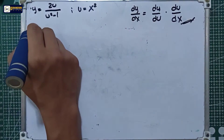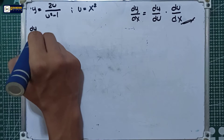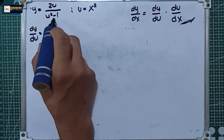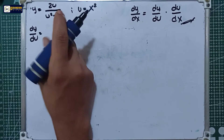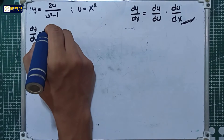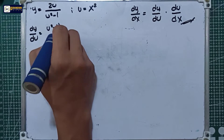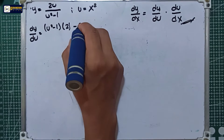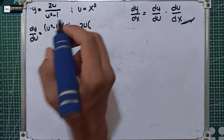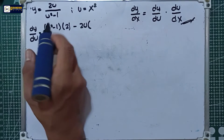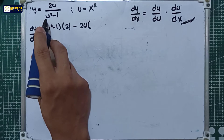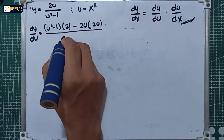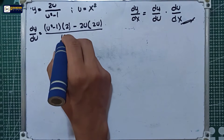We will derive the y equation with respect to u, so dy/du equals the derivative of 2u over u squared minus one. We will use the quotient rule here. That is equal to u squared minus one multiplied by the derivative of the numerator, which is 2, minus 2u multiplied by the derivative of the denominator.